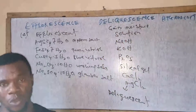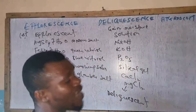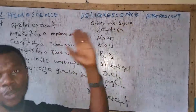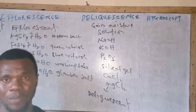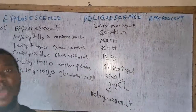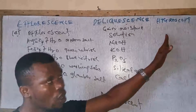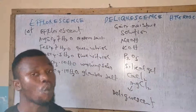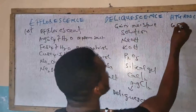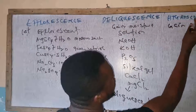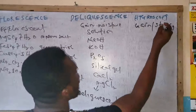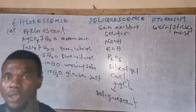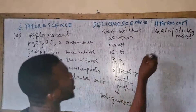Hygroscopy is similar to deliquescence but quite different. In hygroscopy, the substance when exposed to the atmosphere will absorb moisture, but instead of forming a solution, it either becomes sticky or just moist. It gains moisture and becomes sticky or moist, but will never form a solution like a deliquescent substance.